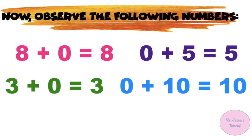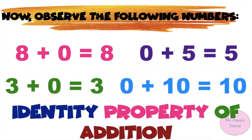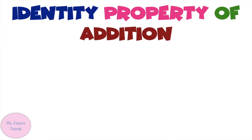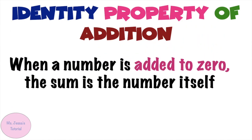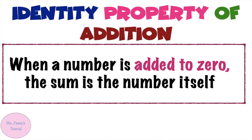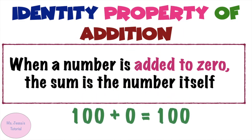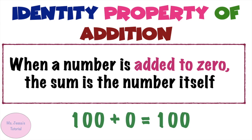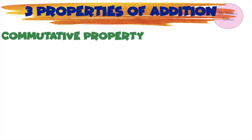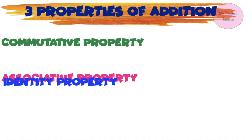When you add 0 to any number, the sum is always that number. This property is called the identity property. Zero is the identity element of addition. Identity property of addition states that when a number is added to 0, the sum is the number itself. For example, 100 plus 0 equals 100. We have now studied three properties of addition: commutative property, associative property, and identity property.